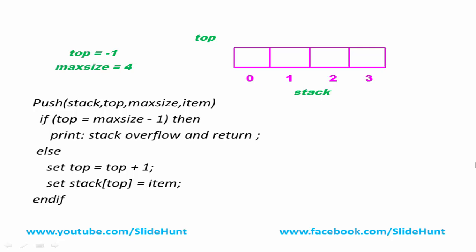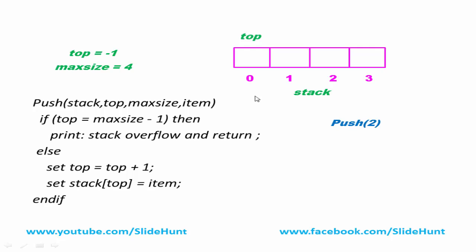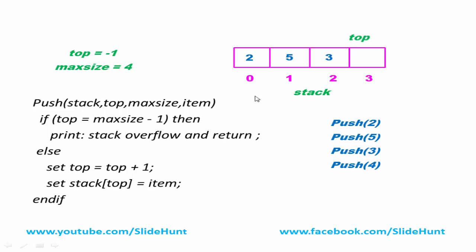Let's see how the algorithm executes. I'm going to push the item 2. First it checks if top equals max size minus one — top is minus one, so the condition is false. We increment top by one; now top is at index zero. We put 2 at index zero. Next we push 5: increment top, then push 5 at index one. Similarly we push 3 and 4. After inserting 4, top is at index three. Now I push 7 — the condition is true, so it prints overflow and returns.